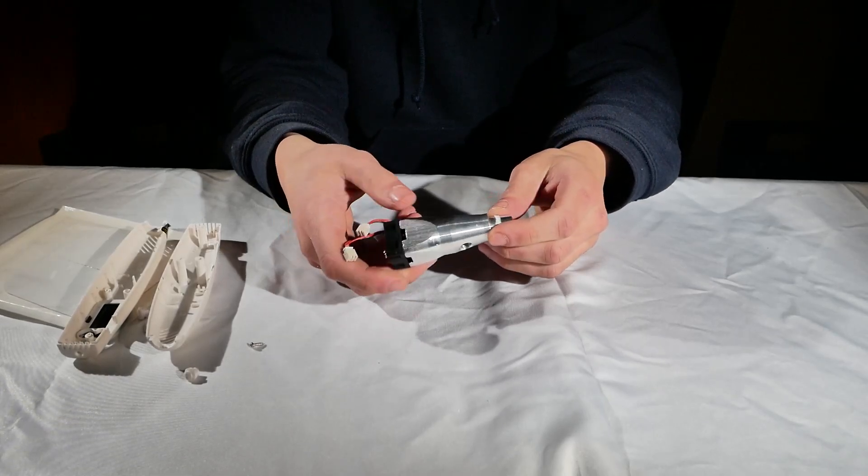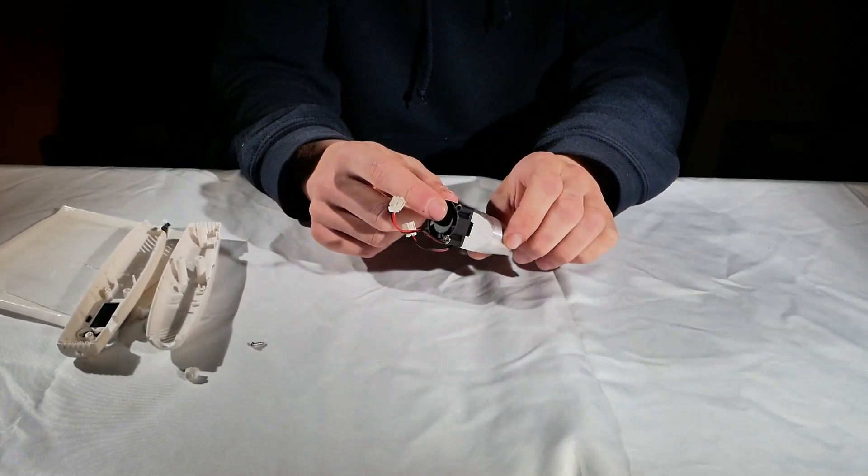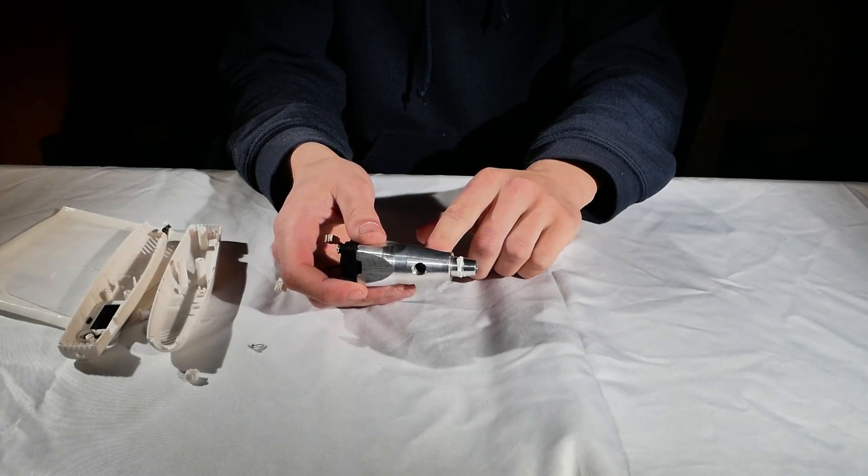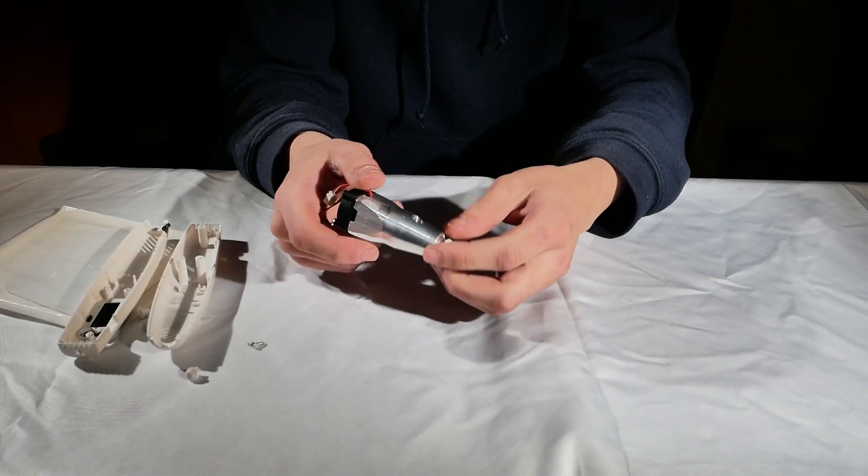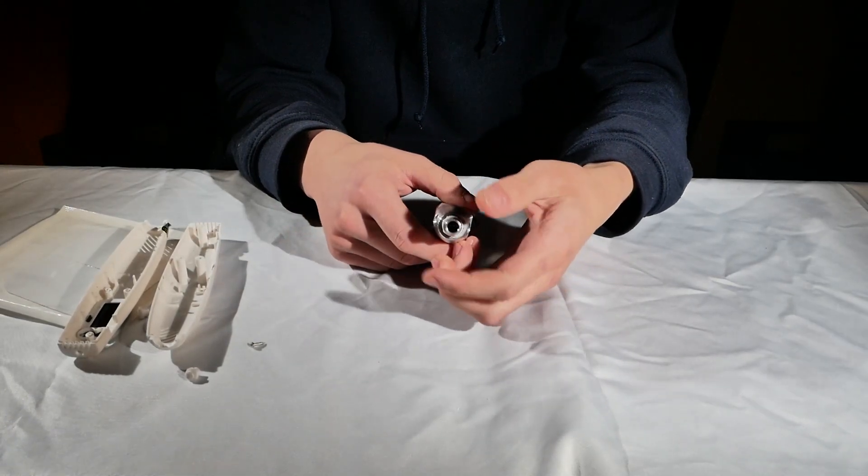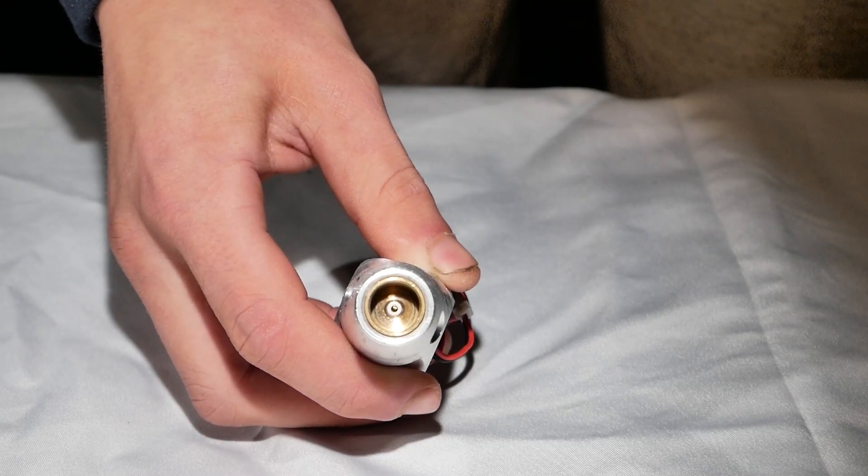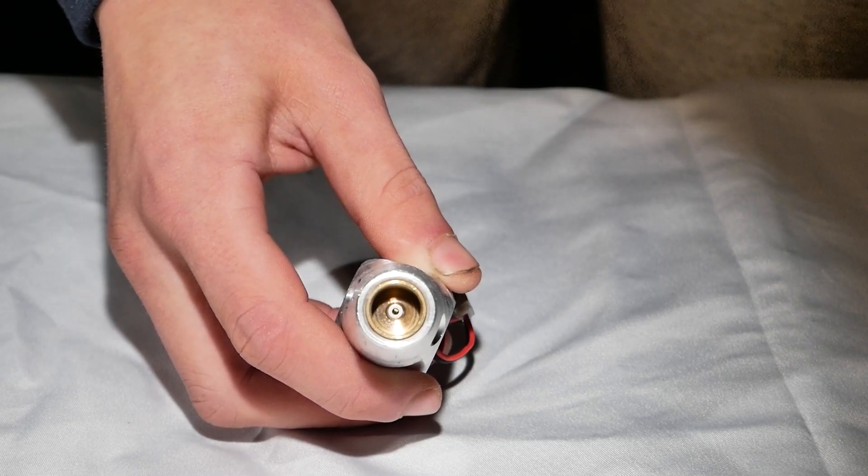So here is the whole laser assembly. It looks like this is a cooling block and the fan is blowing through these two holes. Where's the laser though? It must be in here. So in there is the laser diode. And that is what actually emits the blue light.